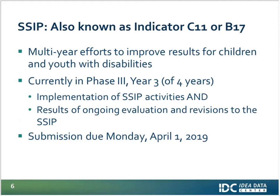First, a very quick recap of where we are in the SSIP — also known as Indicator C11 or B17. The SSIP is a multi-year effort to improve results for children and youth with disabilities through statewide systemic change. We have passed through Phases 1 and 2, and we're currently in Phase 3 — specifically year three out of four years of Phase 3. Phase 3 is about implementation of SSIP activities and the results of ongoing evaluation and revisions.